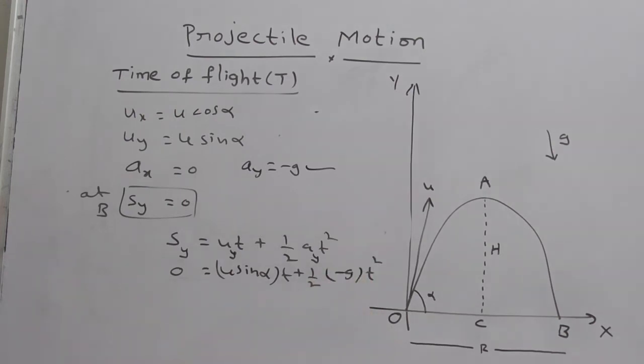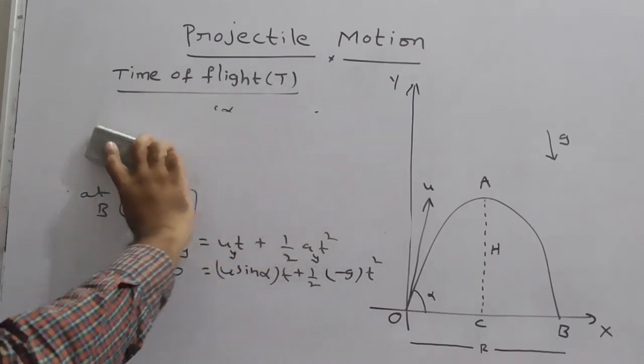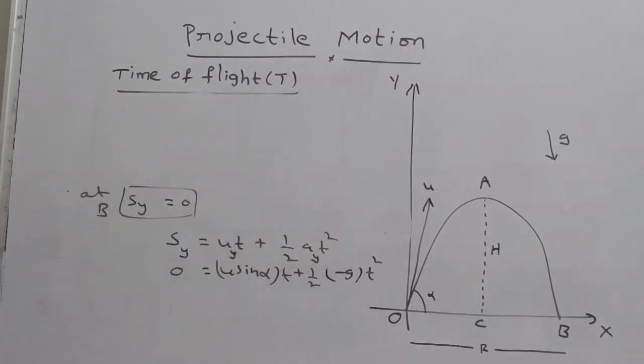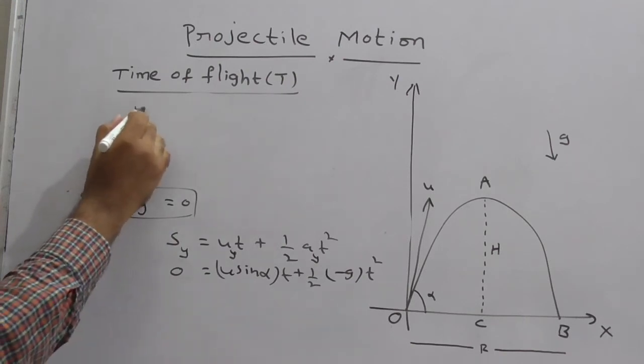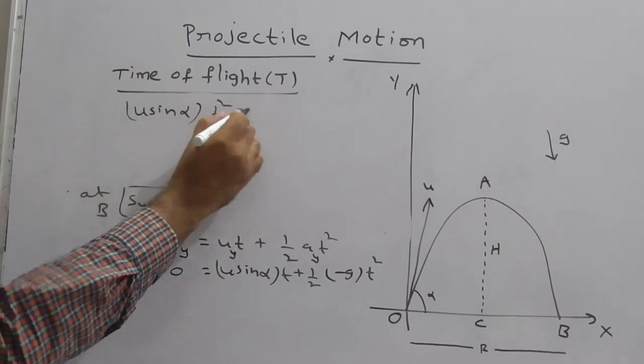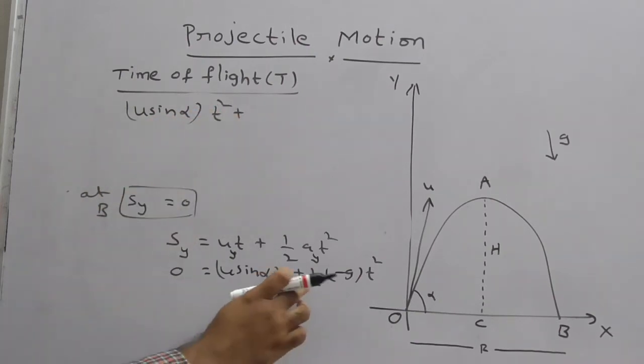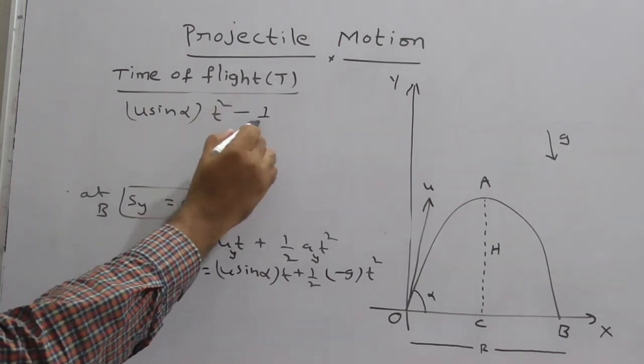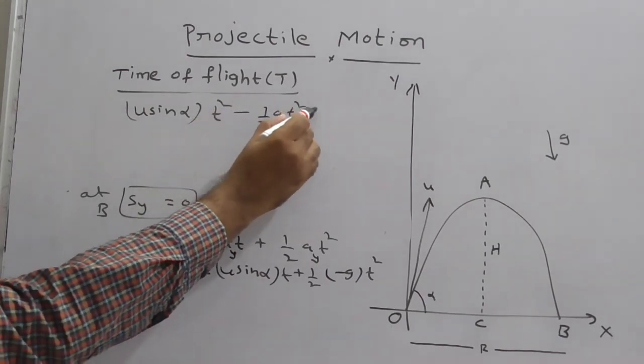Now, here solve this. So you get the answer, that is the derivation of time of flight t. So what is your equation here? U sin alpha t plus half into minus g. So this can be written as u sin alpha t minus half g t square is equal to 0.